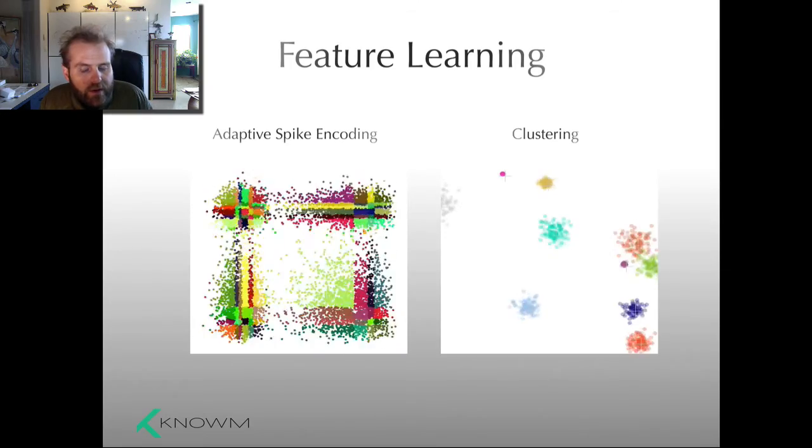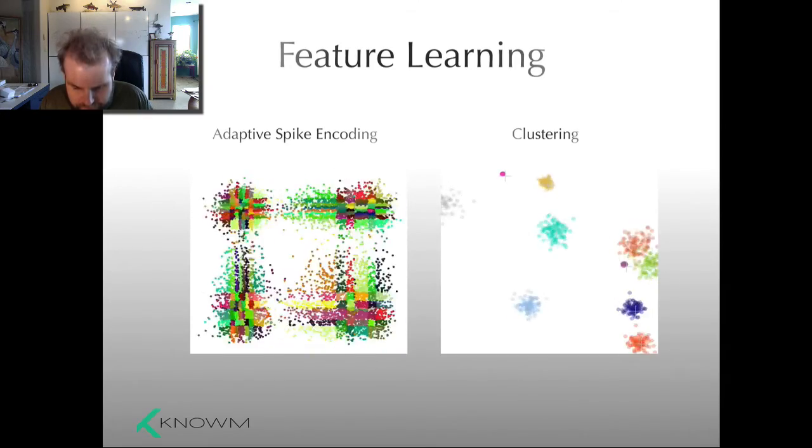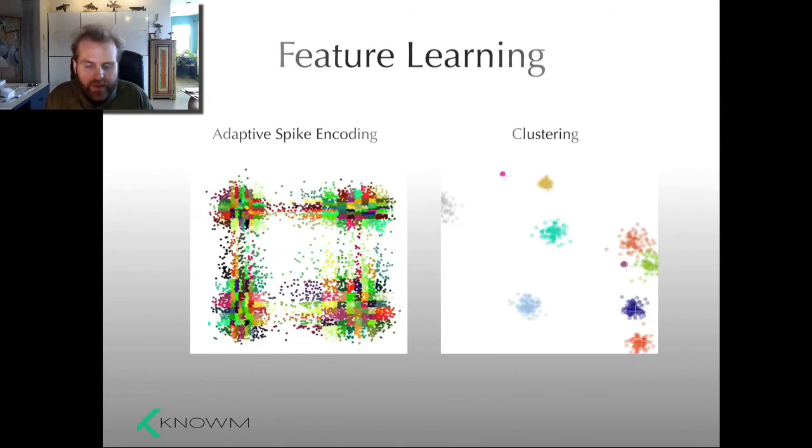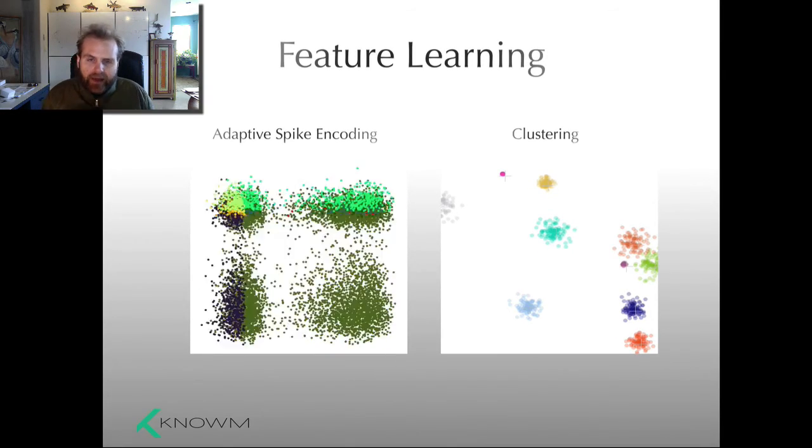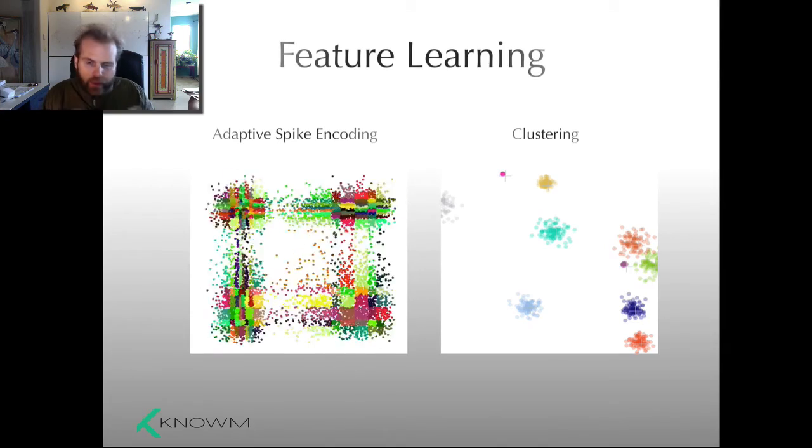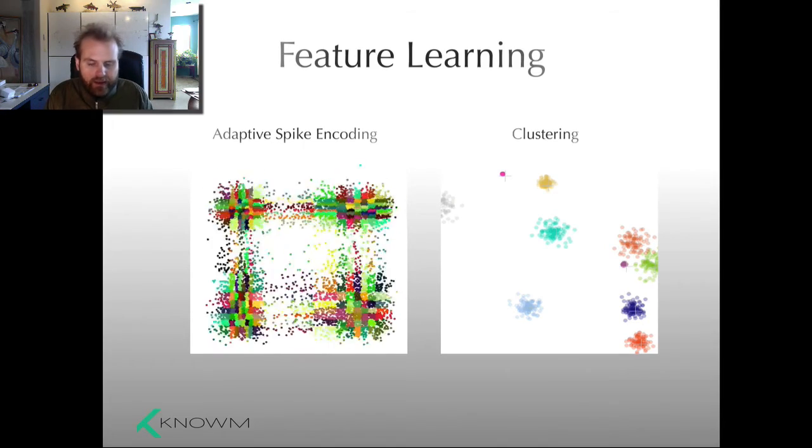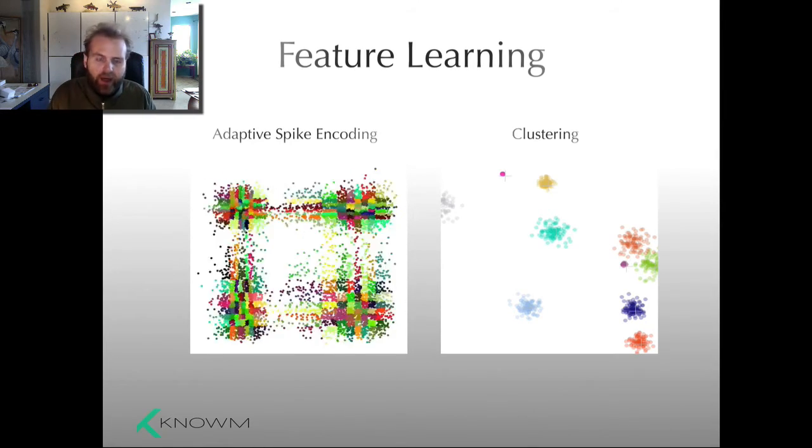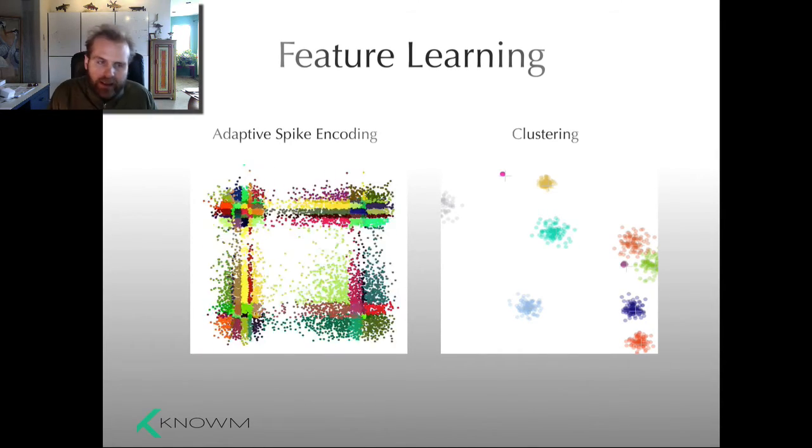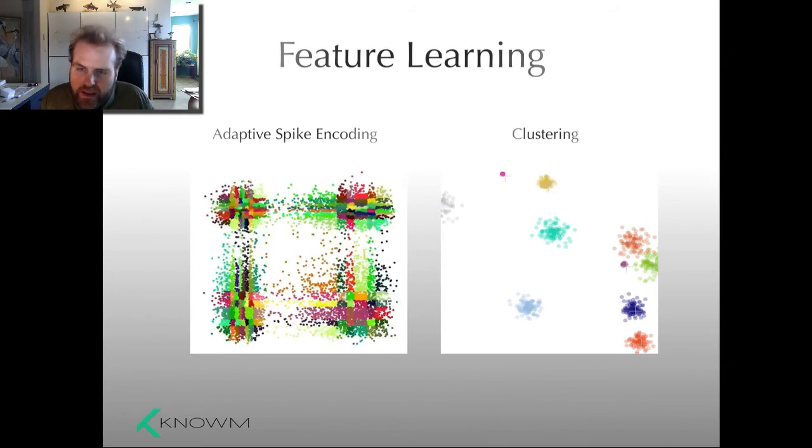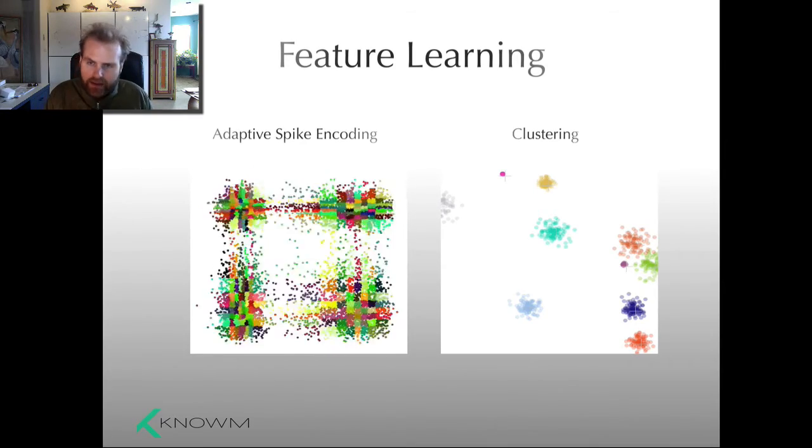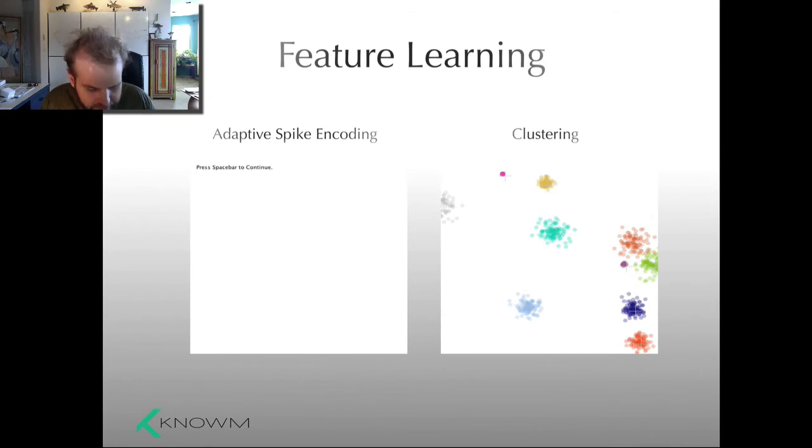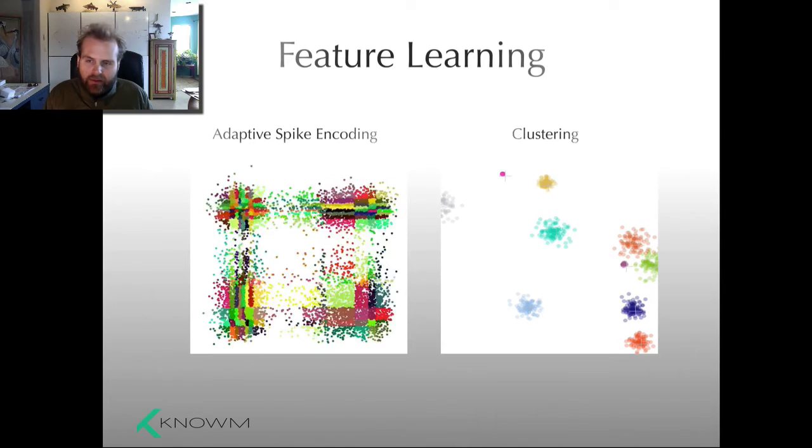Next is something that we call feature learning. There's multiple ways to go about this. On the right is something called clustering. It's taking patterns of data and grouping them together in certain ways, so that similar patterns map to sort of the same output. The thing on the left is adaptive spike encoding. You can think of that as sort of an analog to digital conversion. Both of these things are important in the process of performing pattern recognition operations.